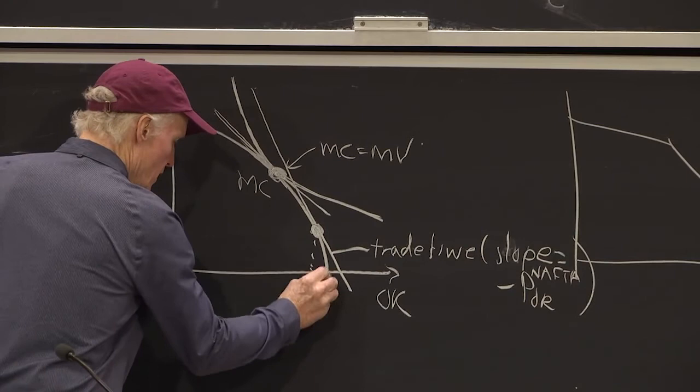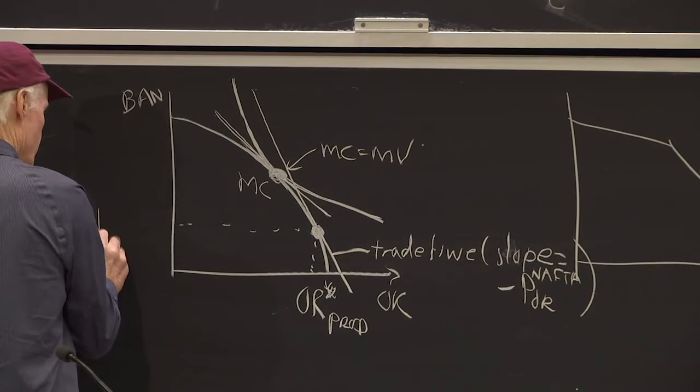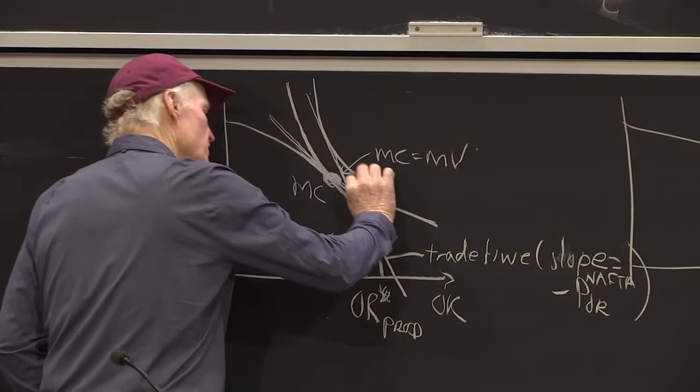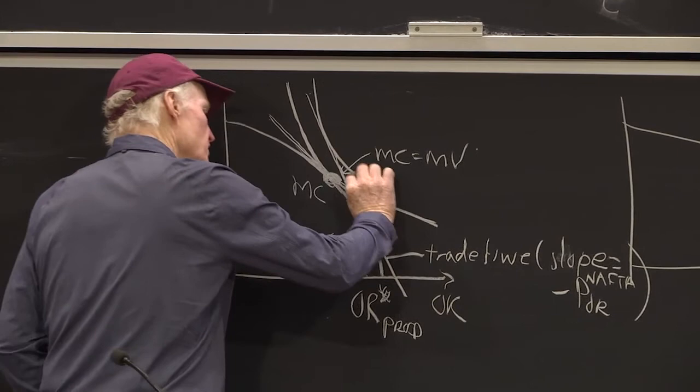He would produce here, orange star production, banana star production. And then he would trade with other people in NAFTA to get to a higher indifference curve, up here. Orange star consumption, banana star consumption.